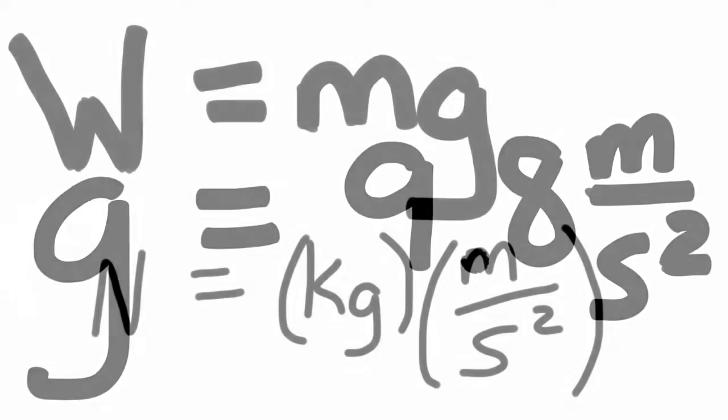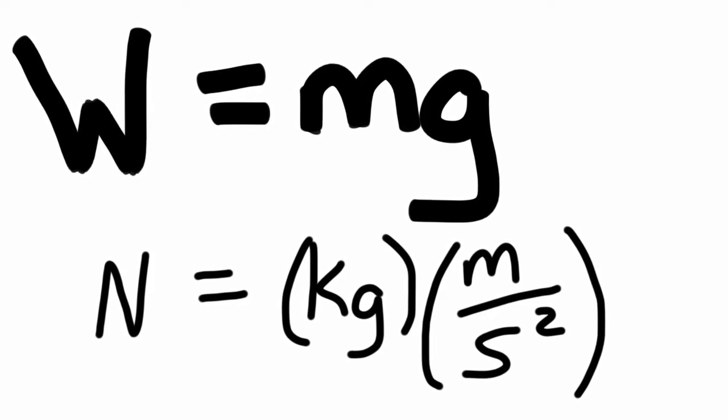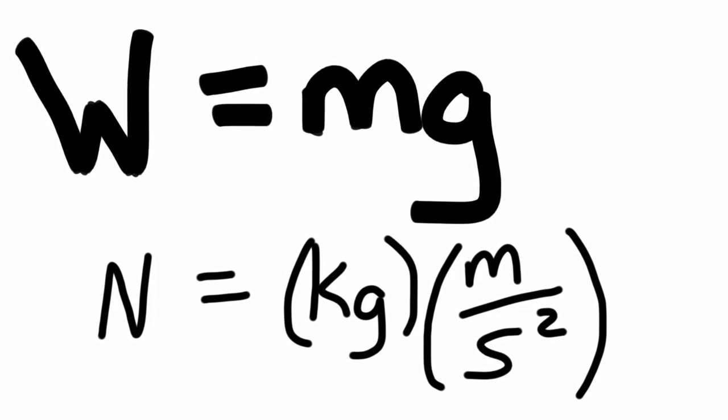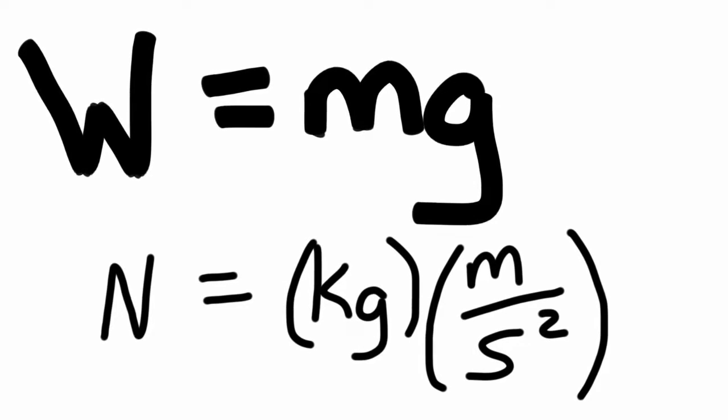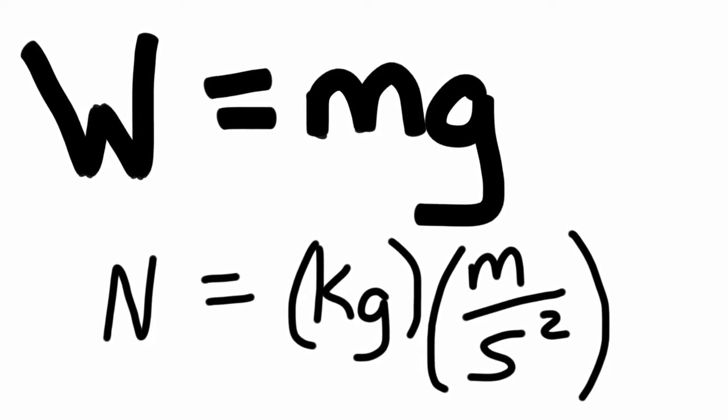And so we get Newtons, as weight on the left-hand side, is equal to kilograms times meters per second squared, because obviously kilograms times meters per second squared is Newtons.